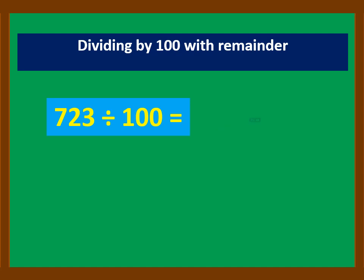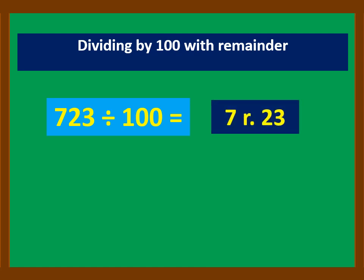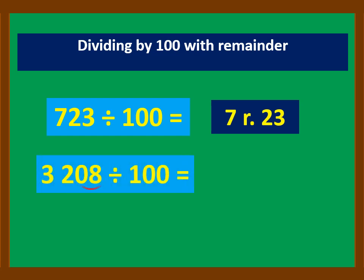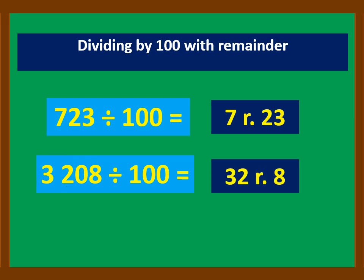For the next example divided by 100, the last two digits are the remainder, and the remaining number, 32, is the quotient. So the answer is 32, remainder 8.